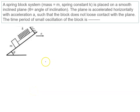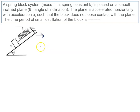A spring-block system: mass is m, k is the spring constant. It is placed on a smooth inclined plane where theta is the angle of inclination. The plane is accelerated horizontally with acceleration a, such that the block does not lose contact with the plane. Find the time period of small oscillations.